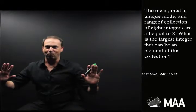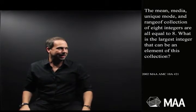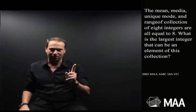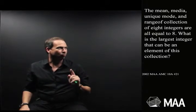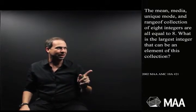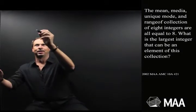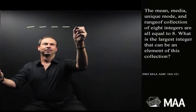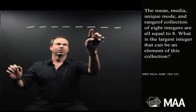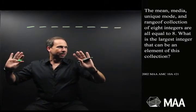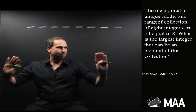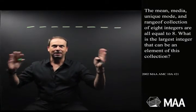Alright, I know I read it but I've got to take this slowly. The mean, median, unique mode - so one mode - and range of a collection of 8 integers are all equal to 8. There's a lot of 8's going on. Let me be very clear. We have 8 integers: 1, 2, 3, 4, 5, 6, 7, 8. The mean, median, mode, and range all equal 8.